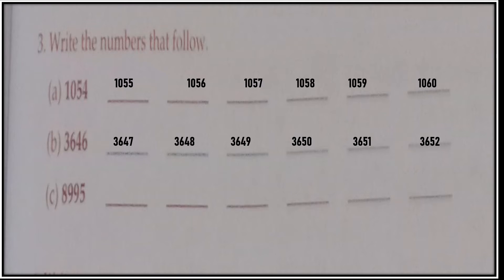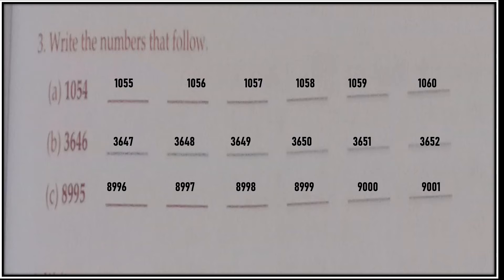Now Part C — starting from 8995. At the ones place you write 8996, then 8997, then 8998, then 8999. Now 8999 has three 9s, so after that three 0s will come and the thousands place digit 8 goes to its forward count, which is 9. So 9000, and then you add 1 at the ones place — so the answer is 9001.